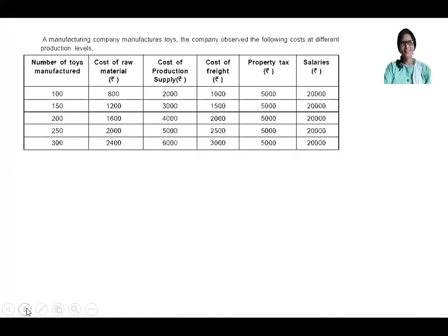This is the question, given in tabular form. It is for commerce. A manufacturing company manufactures toys. The company observed the following costs at different production levels. The first column is number of toys manufactured: 100, 150, 200, 250, 300. Cost of raw materials in rupees: 800, 1200 for 150, 1600 for 200, 2000 for 250, 2400 for 300.